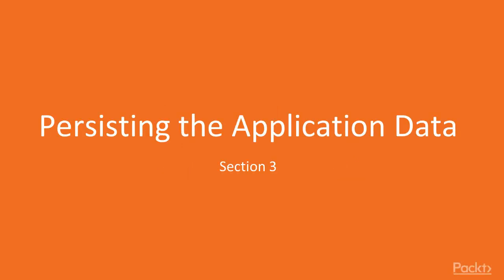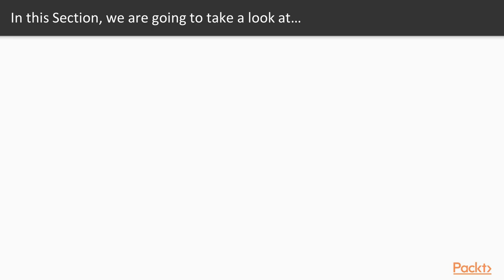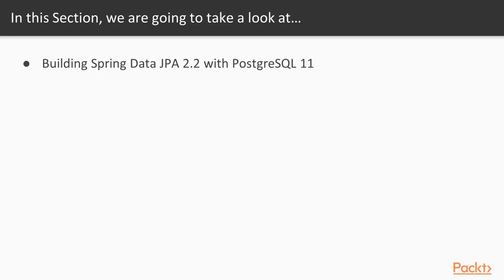It is time now to explore how to implement the data persistency layer of our application through Spring Boot 2.2 platform. In this chapter, we will be emphasizing how to use JPA 2.2 specification to access and manipulate our PostgreSQL data source. Some of our videos will be providing details on how to use MyBatis 3 framework as the running ORM of our application instead of the default Hibernate 5.